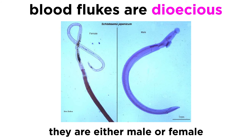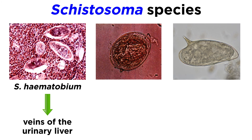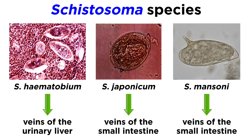Blood flukes differ from most other flukes in that they are dioecious — that is, they are male or female, but not both. Three species of blood flukes, S. haematobium, which resides within the veins of the urinary system, S. japonicum, which lives in the veins of the small intestine, and S. mansoni, which also lives in the veins of the small intestine, account for most cases of schistosomiasis in humans, though there are many other species and even reports of hybridization between existing species.